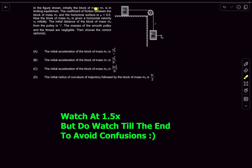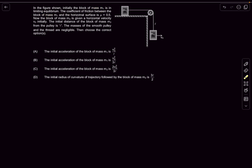We have a block of mass m1 which is in limiting equilibrium, meaning that the friction is limiting and the friction coefficient between this surface and the block is given to be 0.5. Now this mass m2 is given a velocity v0 that is perpendicular to the string, and we have to find the initial accelerations and the initial radii of curvature of the trajectory followed by this mass.